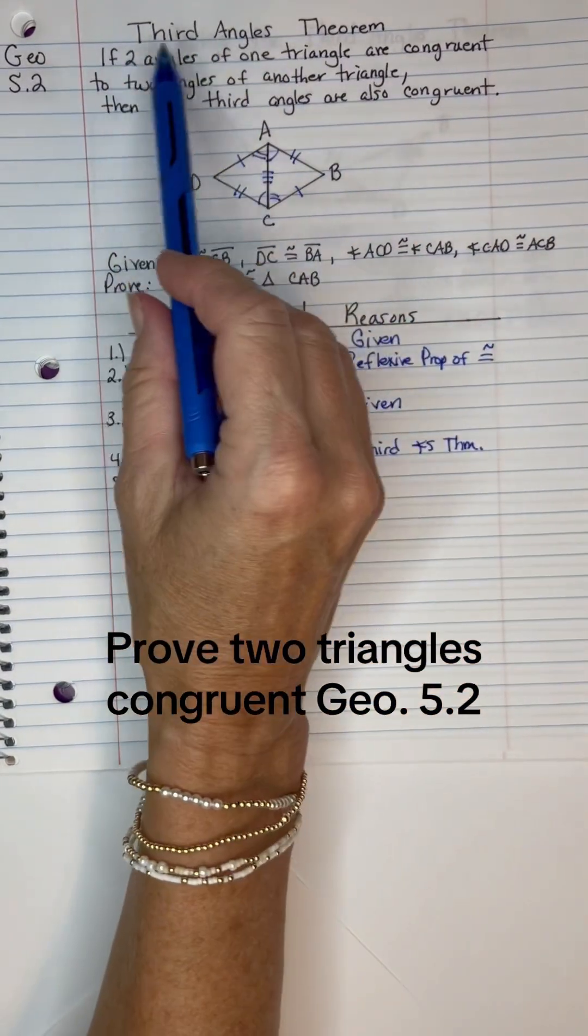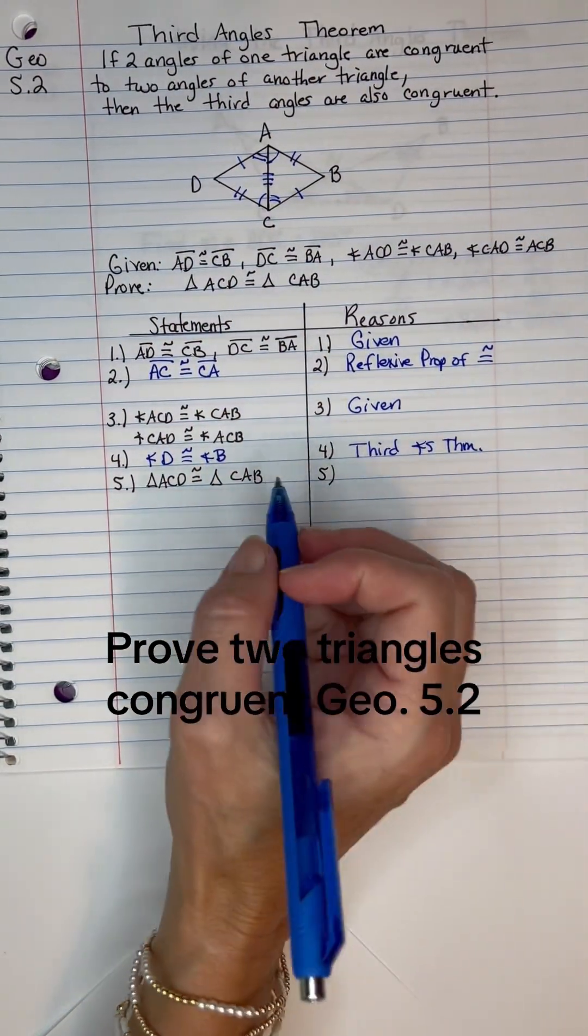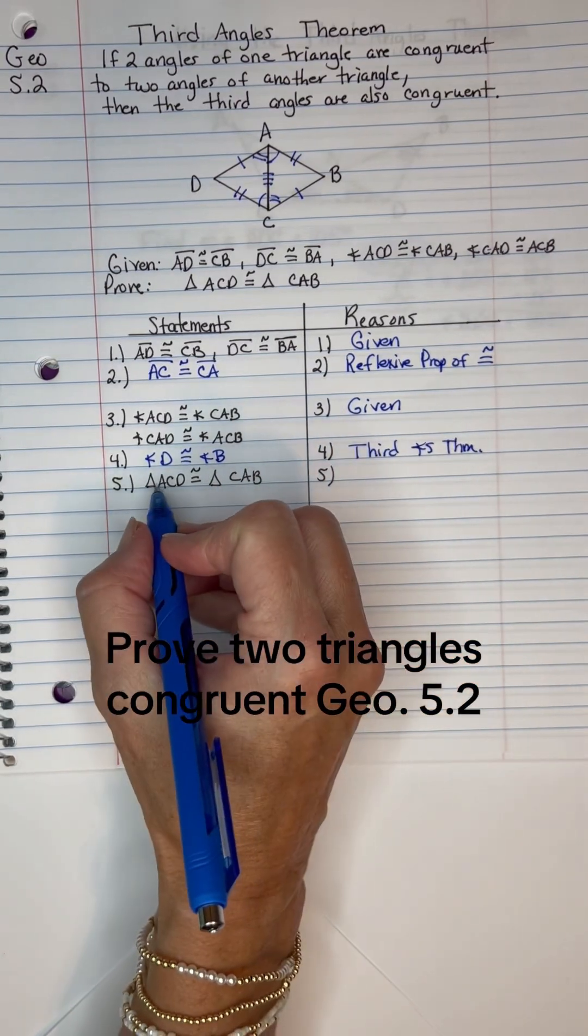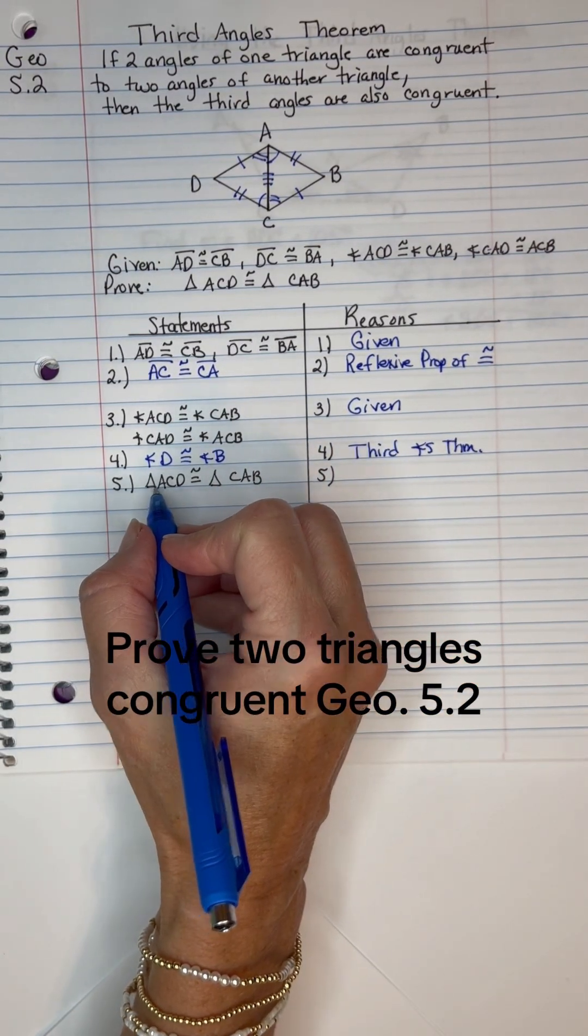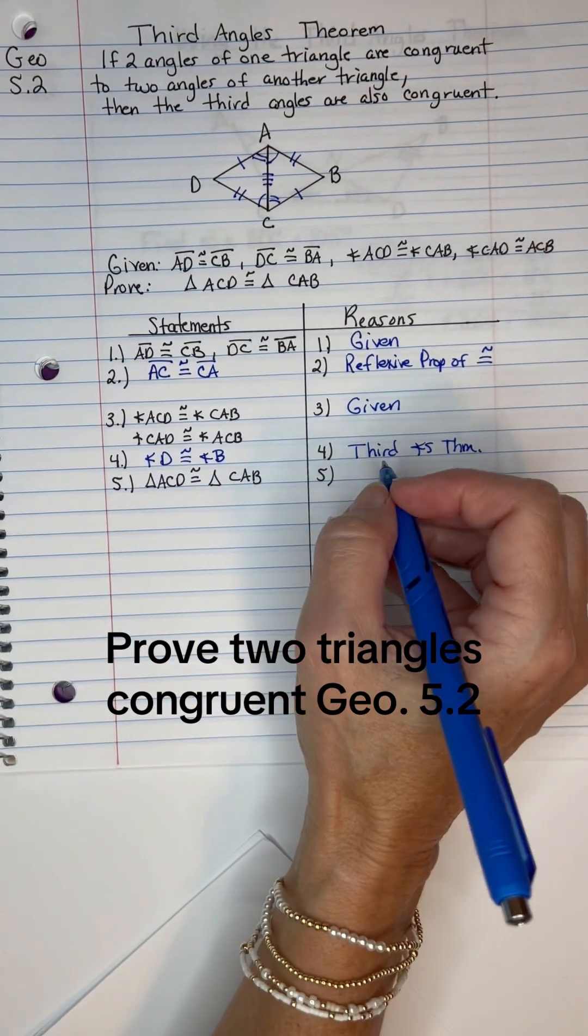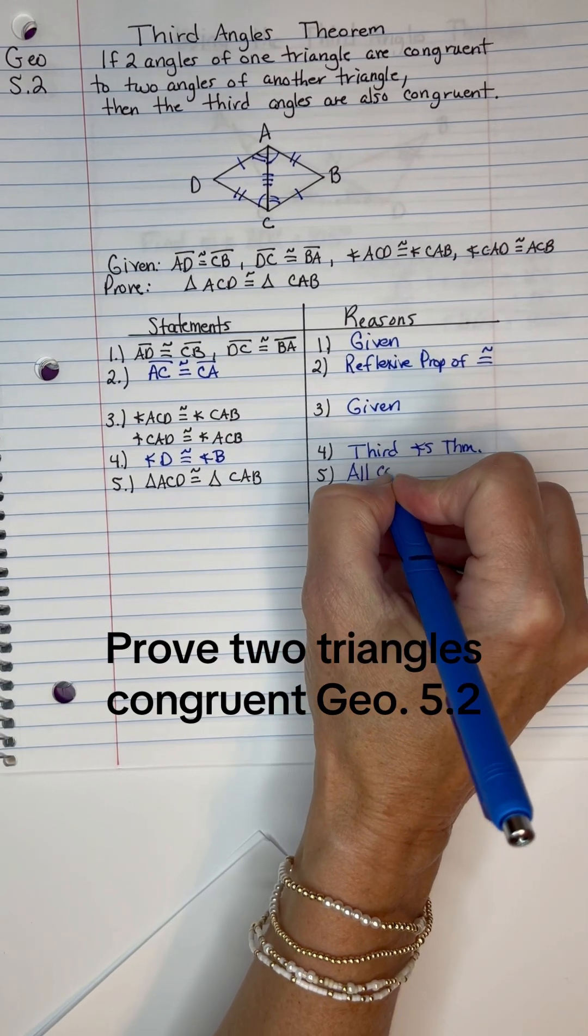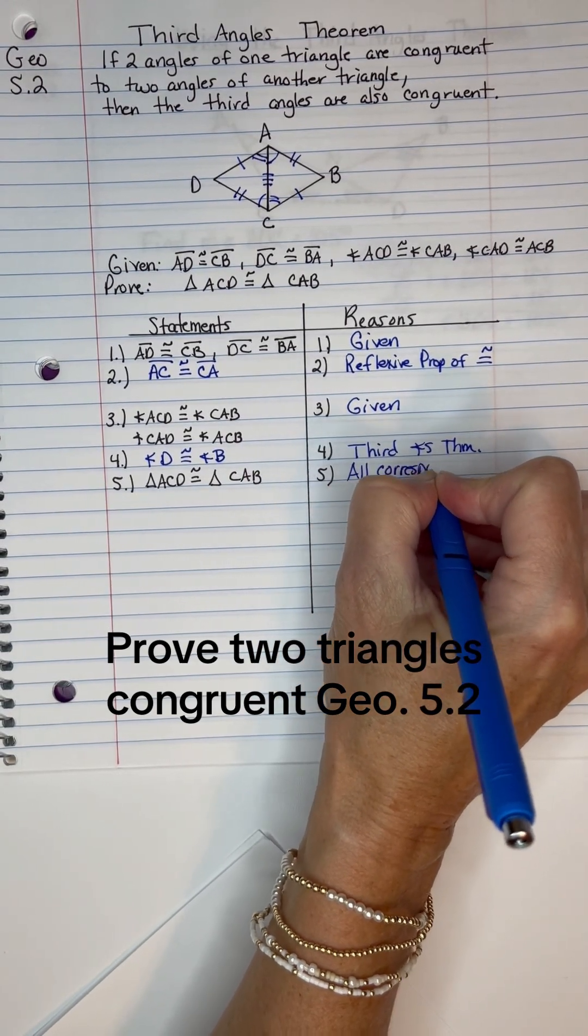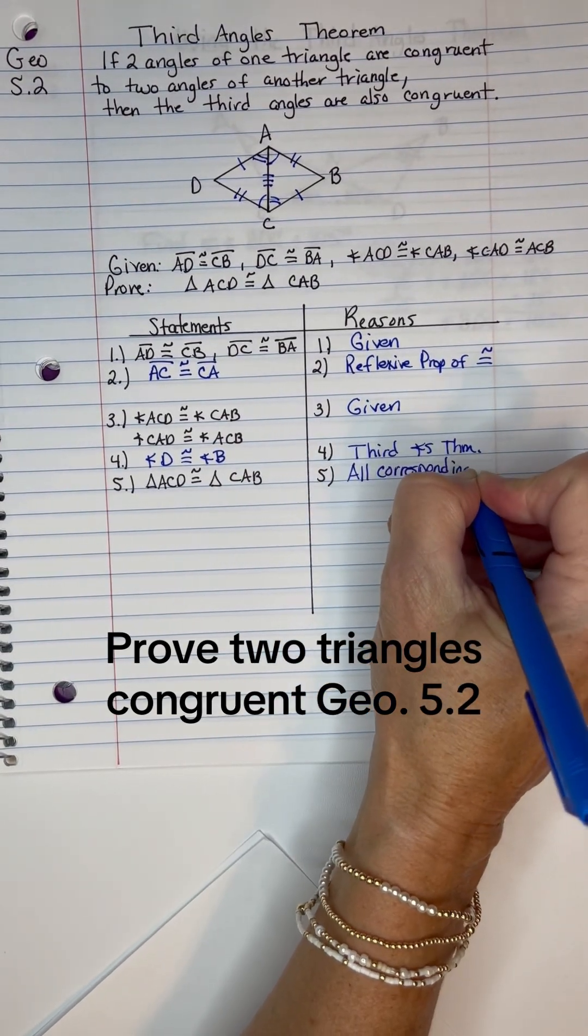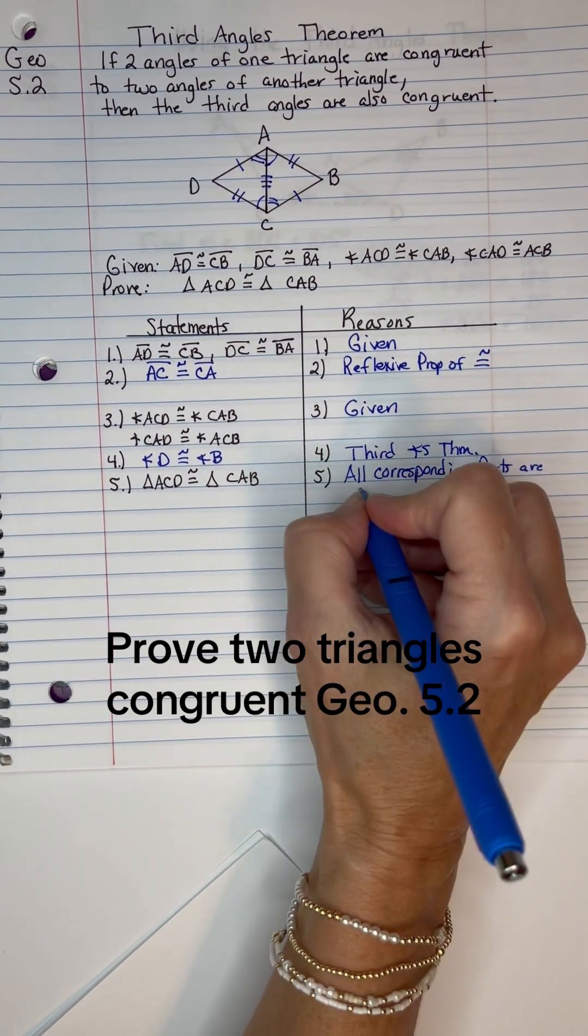Remember, if two angles of one triangle are congruent to two angles of another triangle, then third angles are also congruent. And since we've said that, we have now proved that the triangle on the left side is congruent to the triangle on the right side. And the reason we can say that was all the corresponding parts are congruent.